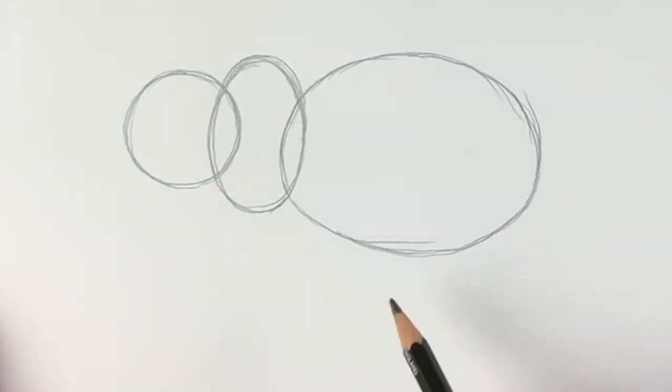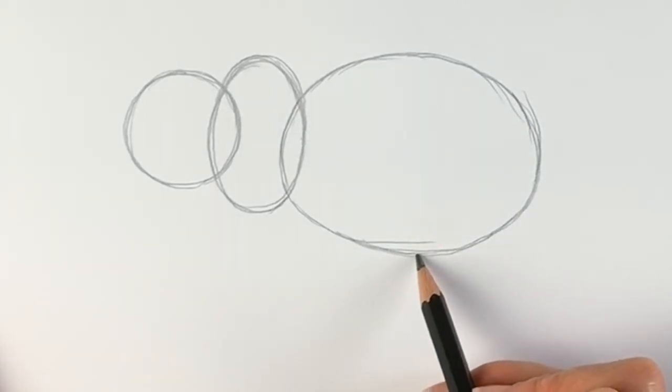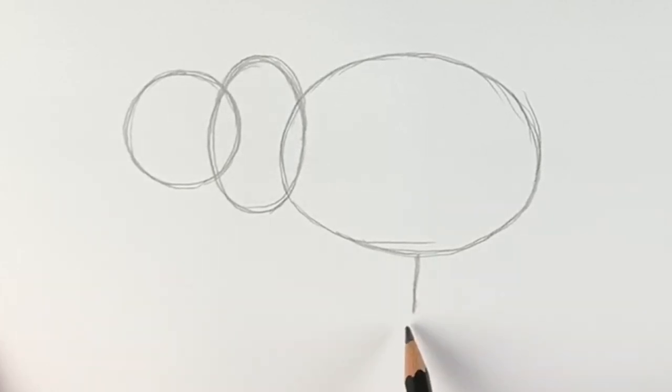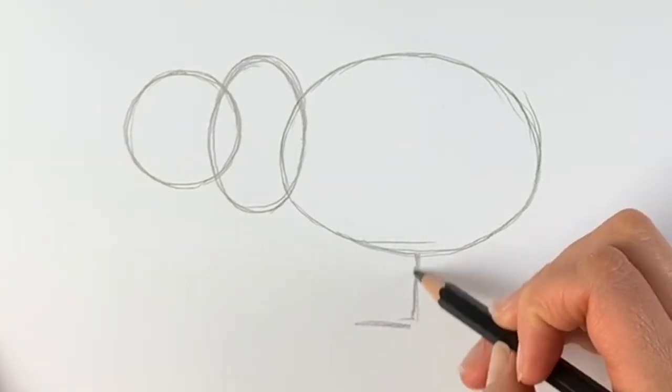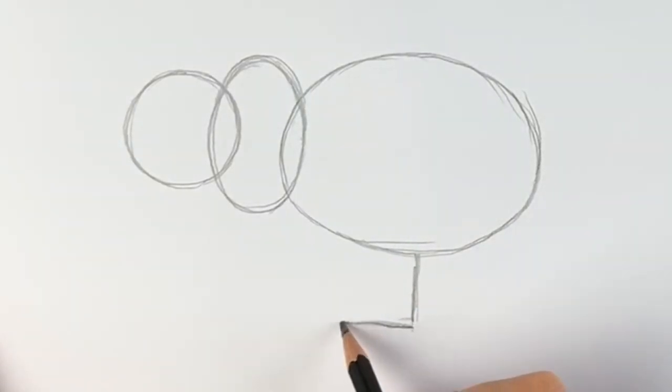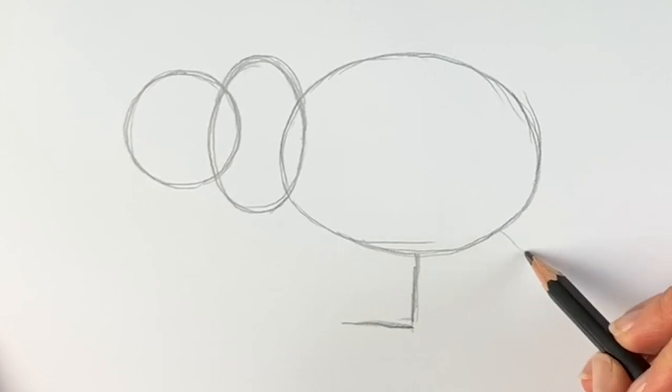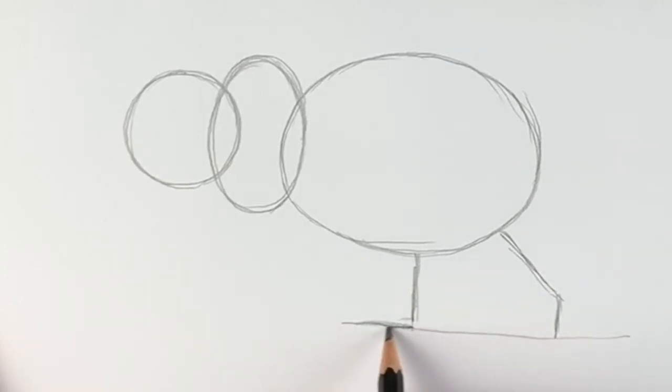So we're going to be drawing one of the legs. Just come down straight down just like this, and we're going to go across. Okay, and then the back one, we're going to go diagonally and then down. So this is where the ground's going to be, so let's just draw in the ground just so that we know that our bear isn't floating in the air.